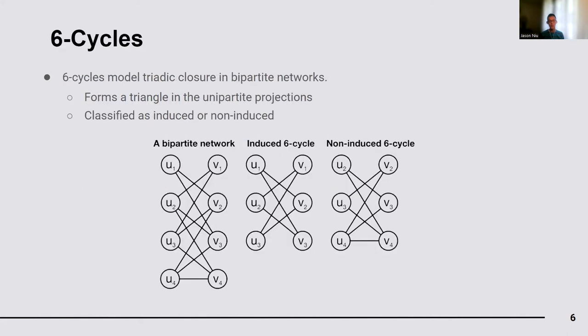One promising structure in this context is the six-cycle, which models the triadic closure in bipartite networks. In the unipartite projection of a bipartite network, we only consider nodes in one of the two sets and connect nodes which have a common neighbor. In both of the unipartite projections, all six-cycles in the original bipartite network form triangles.